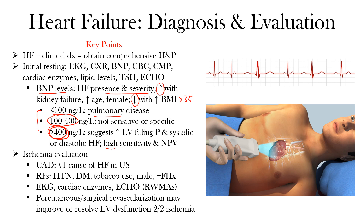A few other labs to consider on initial evaluation include a complete blood count (CBC) for hemoglobin, hematocrit, platelets, and white cell count; a complete metabolic panel (CMP) to check serum electrolytes, kidney and liver function, and glucose levels; cardiac enzymes such as troponin to rule out ongoing cardiac injury; lipid levels for long-term management; and thyroid function tests such as TSH to evaluate for hypo- or hyperthyroidism, which can be reversible causes of heart failure. Manifestations of palpitations and cardiac symptoms from hyperthyroidism may even resolve with treatment.